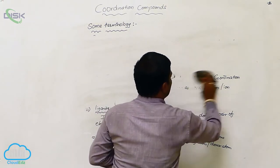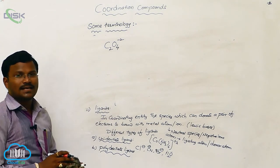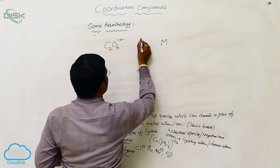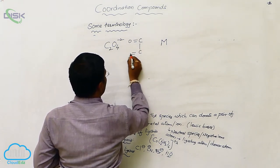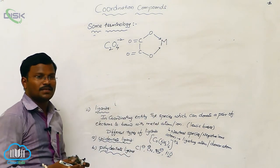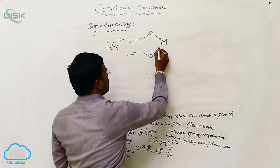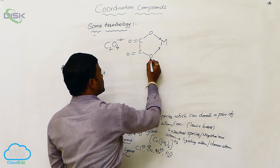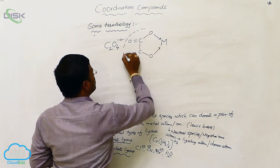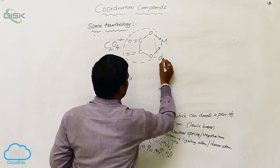Let us consider C₂O₄²⁻, generally called the oxalate ion. The oxalate ion can donate its non-bonding pair of electrons towards the metal atom — both oxygen atoms are connected with the metal. The coordination covalent bond is represented with an arrow mark, indicating electron transfer from oxygen to the metal. In a single ligand, two atoms donate non-bonding pair of electrons, so these are called bidentate ligands.